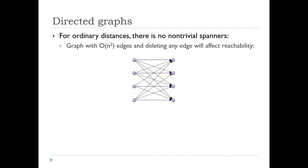In directed graphs, for ordinary distances, there is no non-trivial spanner. For example, in a bipartite graph where all edges are directed from the left side to the right side, there are O(n²) edges, and deleting any edge will cause some vertex to be unable to reach another vertex, meaning there are no non-trivial spanners with few edges for this graph.